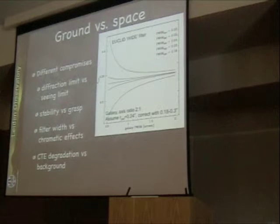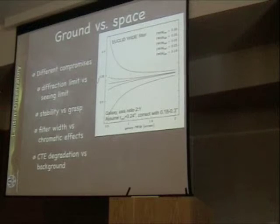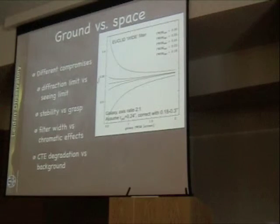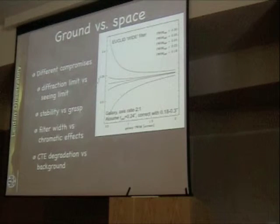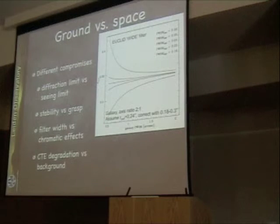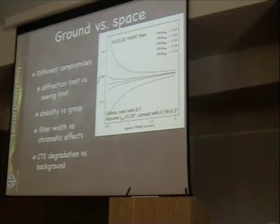The last point is ground versus space. Eventually we all want to do this from space because you can get the better image quality and the stability that you need to really get the highest fidelity measurements. You end up making different compromises than you do from the ground — you trade the diffraction limit for the seeing, you trade stability for the fact that you have a smaller telescope, so the grasp and survey power is a bit lower. And there's a temptation to make the filters as wide as you can in order to catch all those photons with a fairly small telescope in space.